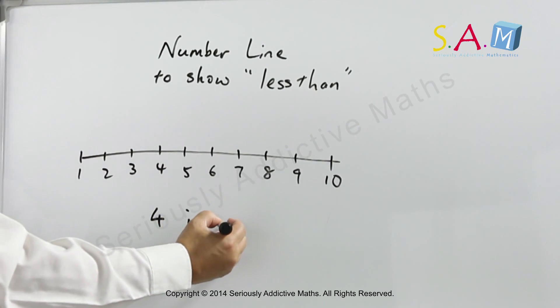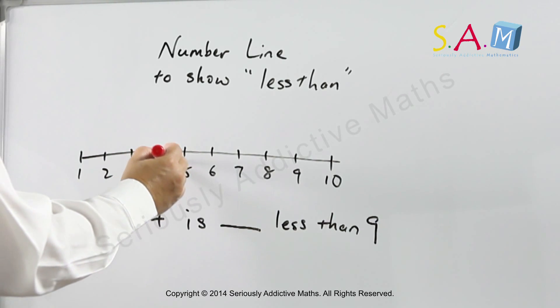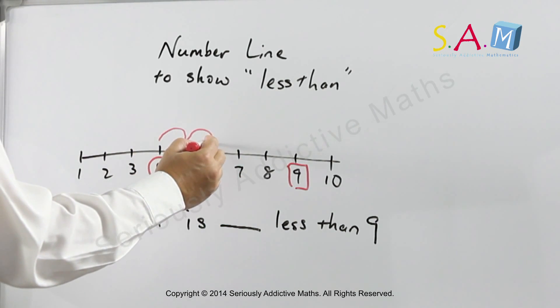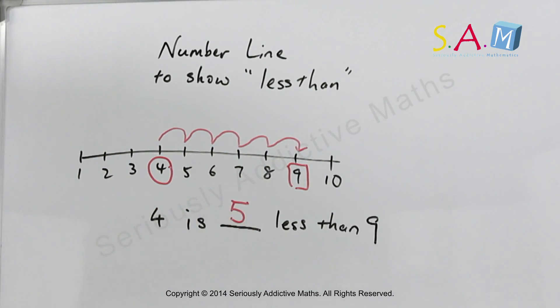4 is how many less than 9? So this is 4, this is 9. How many less than 9? 1, 2, 3, 4, 5. The 4 is 5 less than 9.